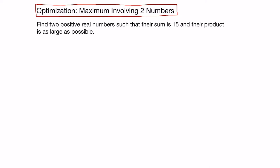To start our exploration of optimization, let's look at a fairly straightforward example which we can use to illustrate some of the concepts. Here we're asked to find two positive real numbers such that their sum is 15 and their product is as large as possible.